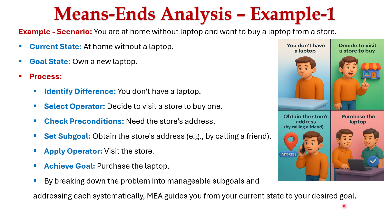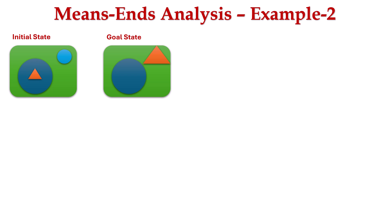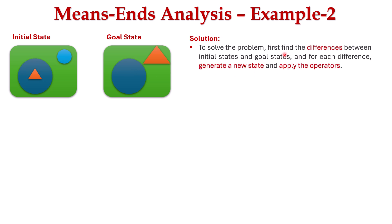Hope you are clear with that simple example. Now let's look at another example for means-ends analysis. In this example, we have two images: the first image represents the initial state and the second represents the goal state. Both images contain different objects. Our task is to transform the initial state to the goal state step by step. We find the difference between the initial and goal states, generate a new state for each difference, and apply operators such as move, delete, and expand.